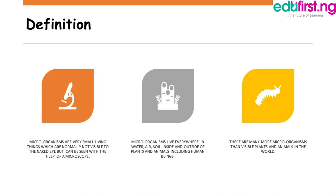We are going to start with the meaning of microorganisms. Microorganisms are tiny living things which are normally not visible with our naked eyes but with the aid of a microscope. Therefore there are many more microorganisms than visible plants and animals in the world.